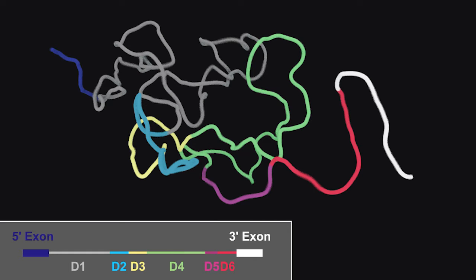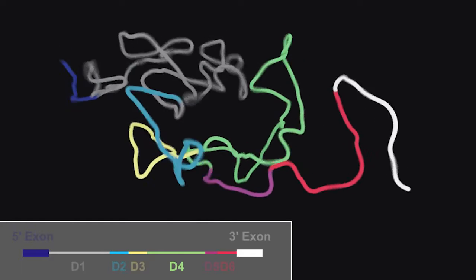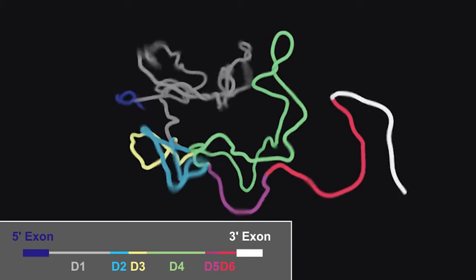Group II introns are long RNAs with an intronic open reading frame that encodes for a protein cofactor called maturase. A group II intron can fold into a six-domain structure.